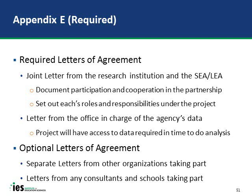Appendix E is required. Here you put in your letters of agreement. There are two required letters: first, a joint letter from the research institution and the education agency documenting their participation and cooperation and setting out roles and responsibilities; and second, a letter from the office in charge of the agency's data, explaining that the project will have access to the data required by the first quarter of year two. You can also include separate letters from any other partners, consultants, and schools taking part. There is a trade-off in getting these letters ahead of time versus how convincing it makes your partnership look.